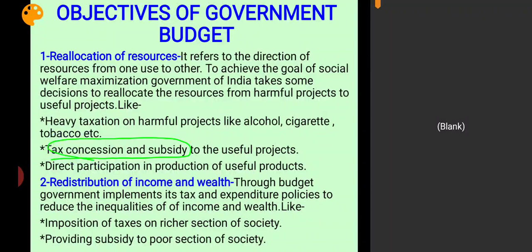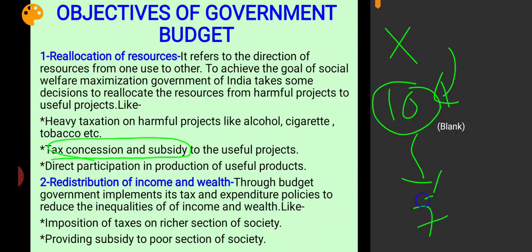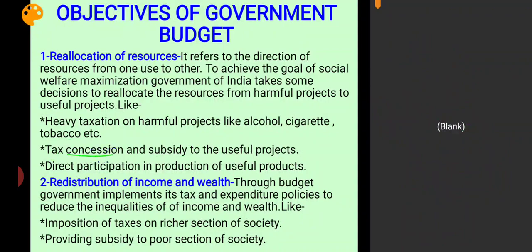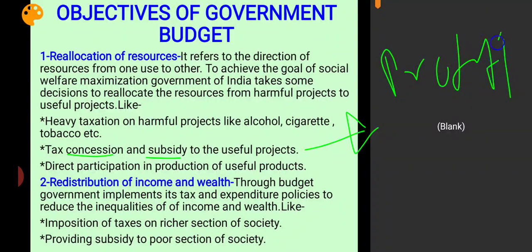Subsidy means that if a product used in an industrial sector has a market price of 10 rupees, the government provides it to the industry at 7 rupees — so 3 rupees is the subsidy. When a project receives tax concessions and subsidies, the prices of inputs and factors of production become lower, cost of production decreases, and profit increases, encouraging more production.